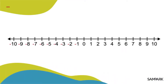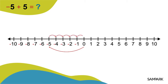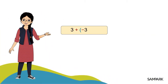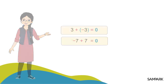अब माइनस 5 प्लस 5 देखते हैं। 0 से पहले पूनांक माइनस 5 तक गए, और धनात्मक पूनांक 5 जोड़ने के लिए माइनस 5 से 5 कदम दाईं ओर बढ़े — तो पहुँचे हम 0 पर। और यही माइनस 5 प्लस 5 का उत्तर है। अब 3 प्लस माइनस 3 क्या होगा? फिर से 0। और माइनस 7 प्लस 7? ये भी 0।